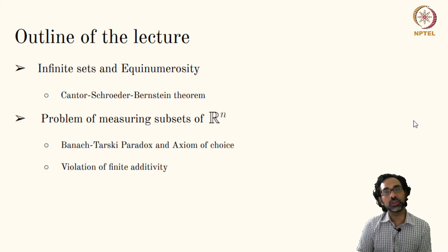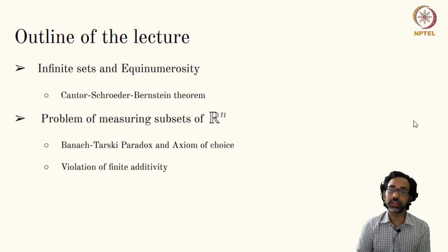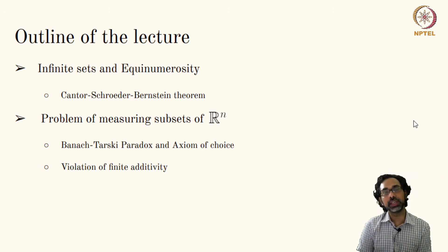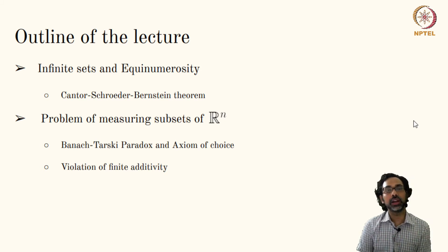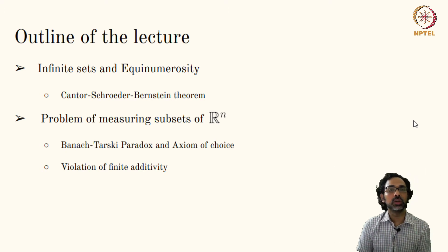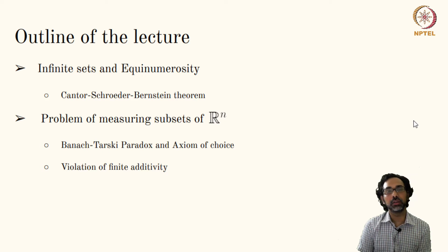The Banach-Tarski paradox uses in a fundamental way the so-called axiom of choice, which is an axiom in set theory. With this axiom of choice, the Banach-Tarski paradox holds, and the violation of finite additivity for subsets of Rn forces us to categorize subsets of Rn into two groups: one will be called measurable subsets and the other will be the non-measurable subsets.